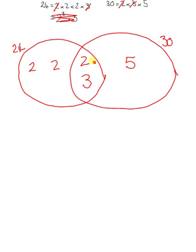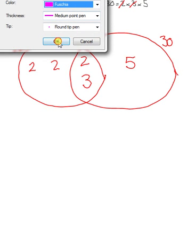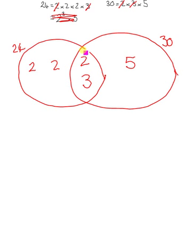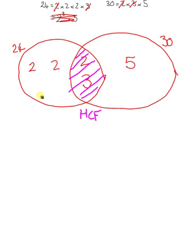Now what we're going to do, we need to find the highest common factor of these numbers. The highest common factor is going to be in this section here. And the lowest common multiple is going to be all of these numbers here.